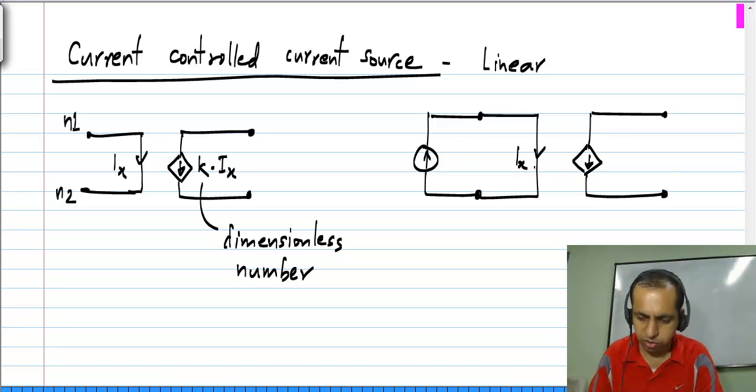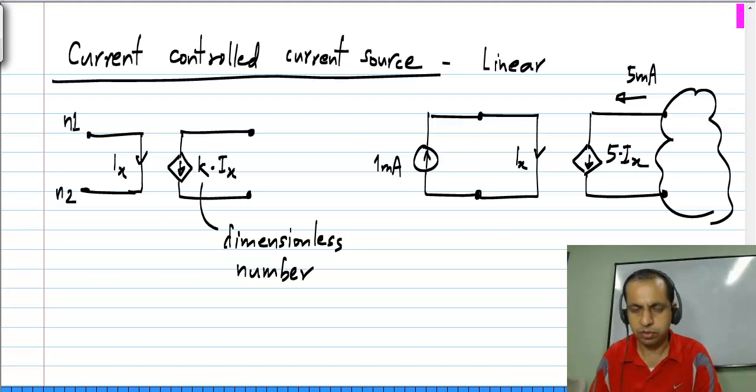Let us say we have a current controlled current source defined to be 5 times the input current, and I drive it with 1 milliamp. I connect this to some arbitrary circuit; this causes a current of 5 milliamps to flow here. That is what is meant by a current controlled current source.